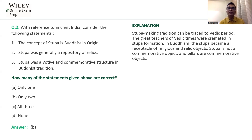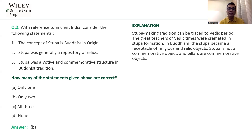The third statement — Stupa was a votive and commemorative structure in the Buddhist tradition. 'Votive' means something kept inside a bigger architectural infrastructure; for example, in Ajanta and Ellora you find Stupas inside the Chaityas — those are called votive Stupas. 'Commemorative' means celebrating a victory. But Stupa is about the ideals of the Buddha and his life, not celebrating victory. So only statement 2 is correct.